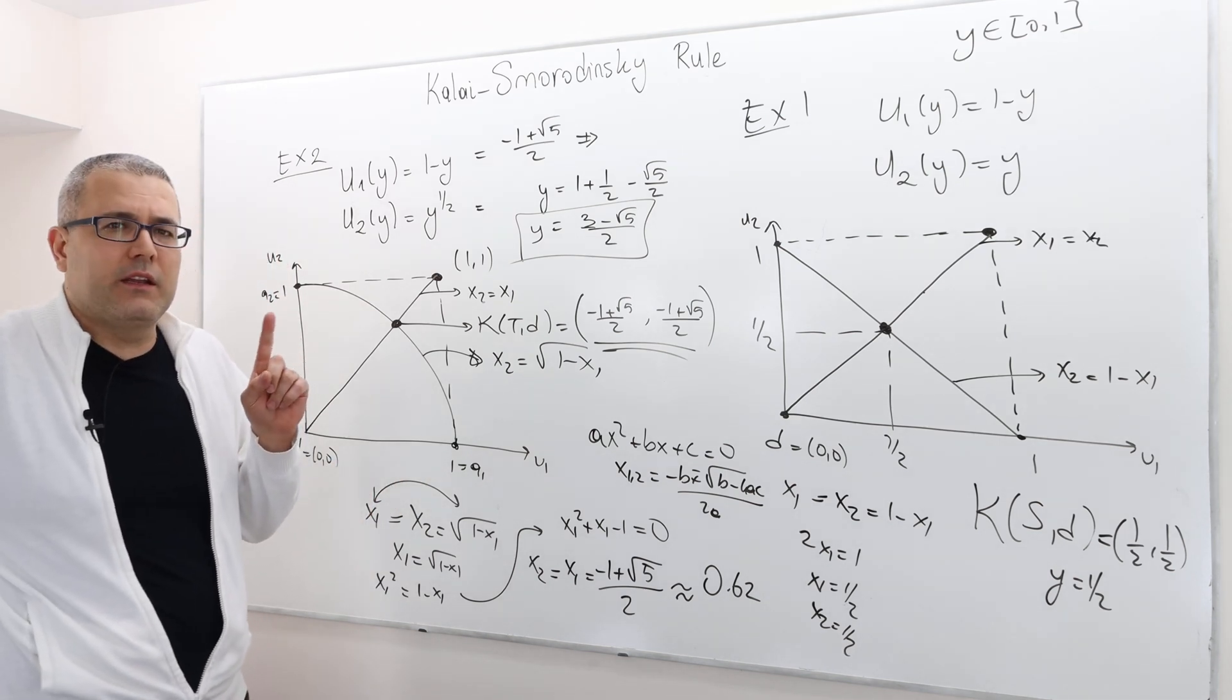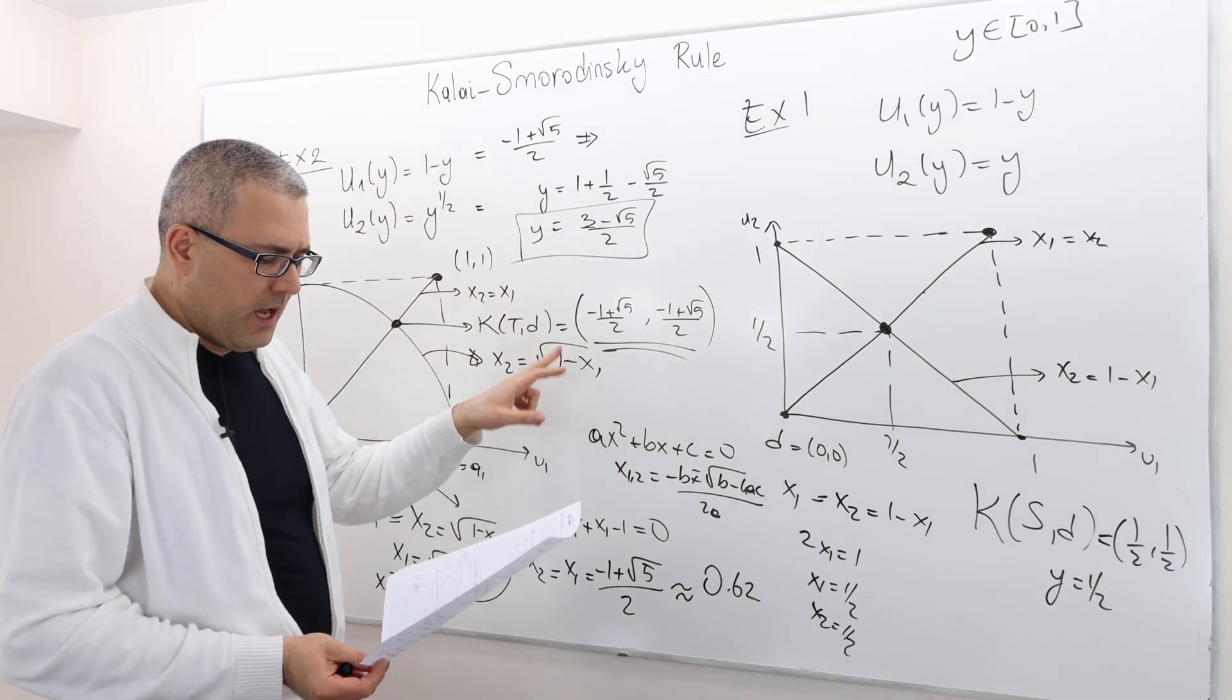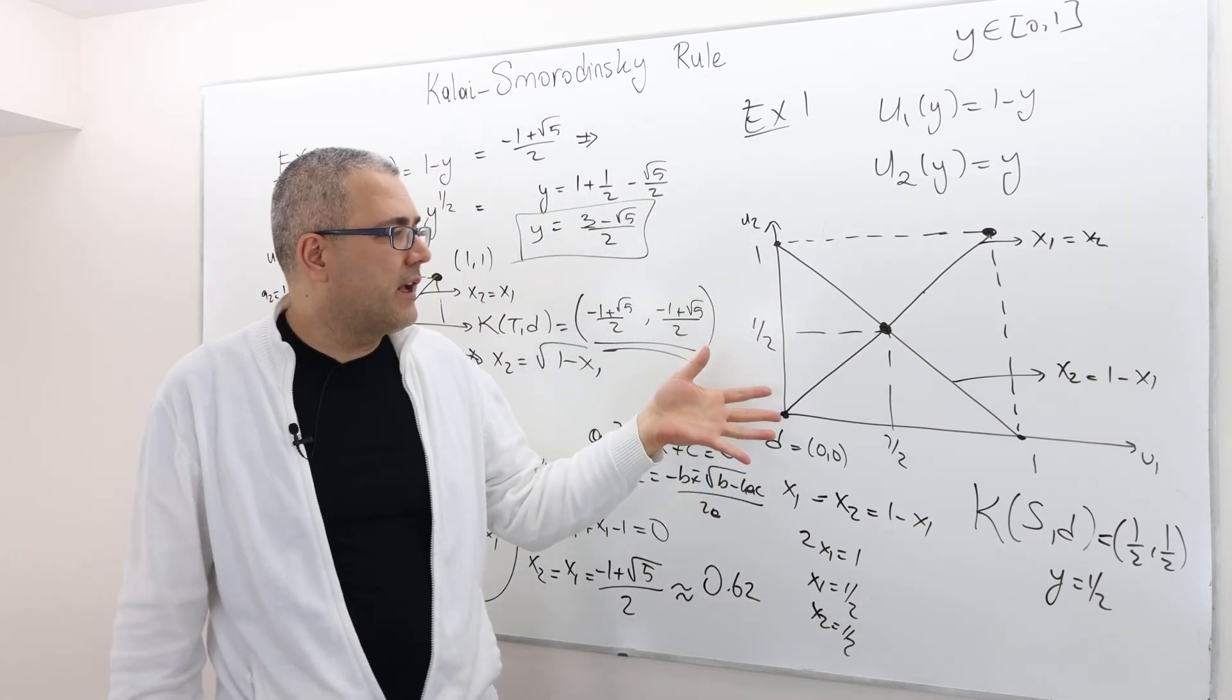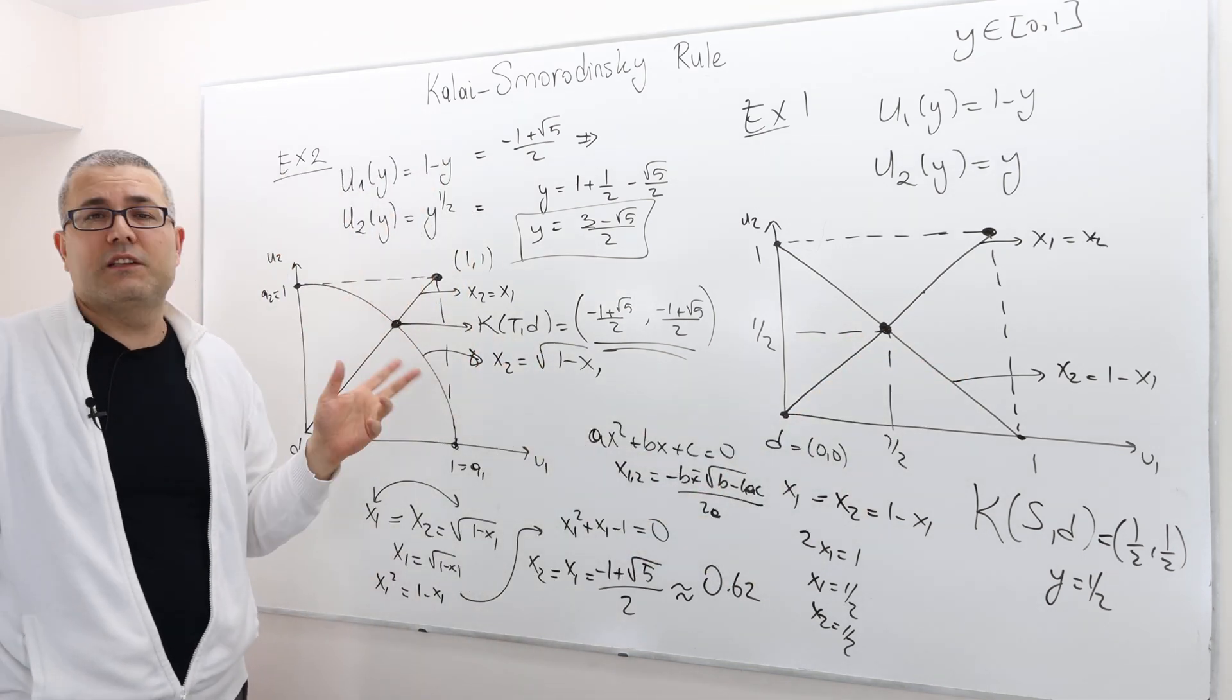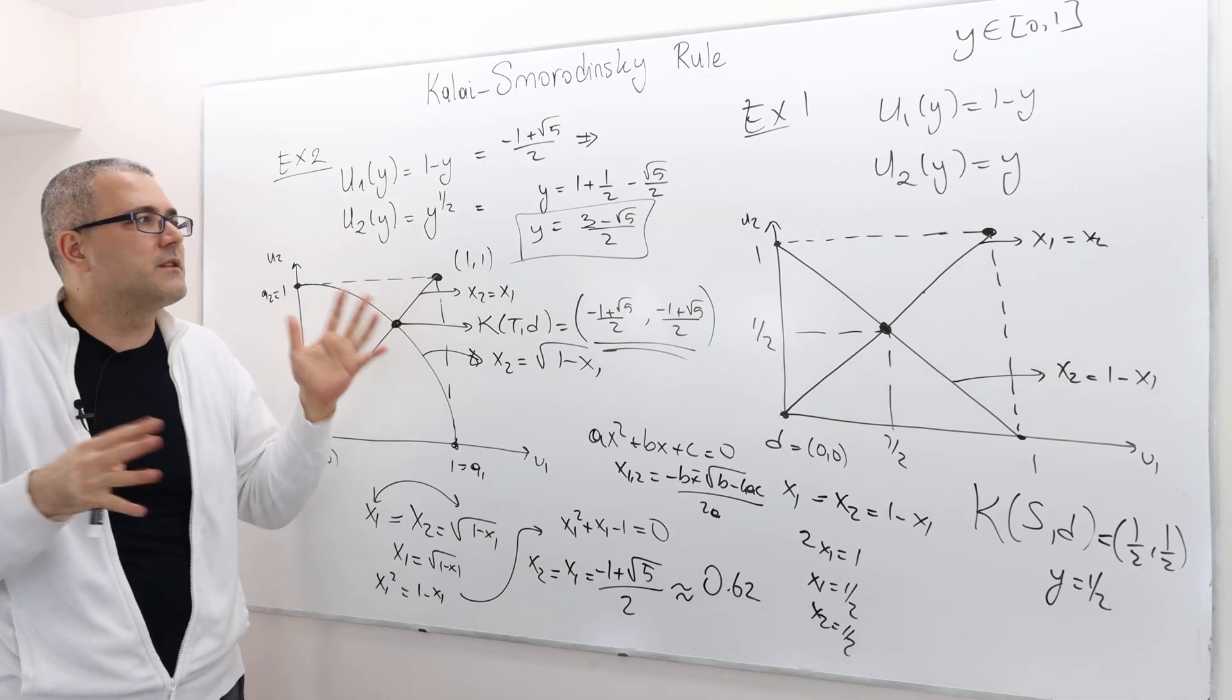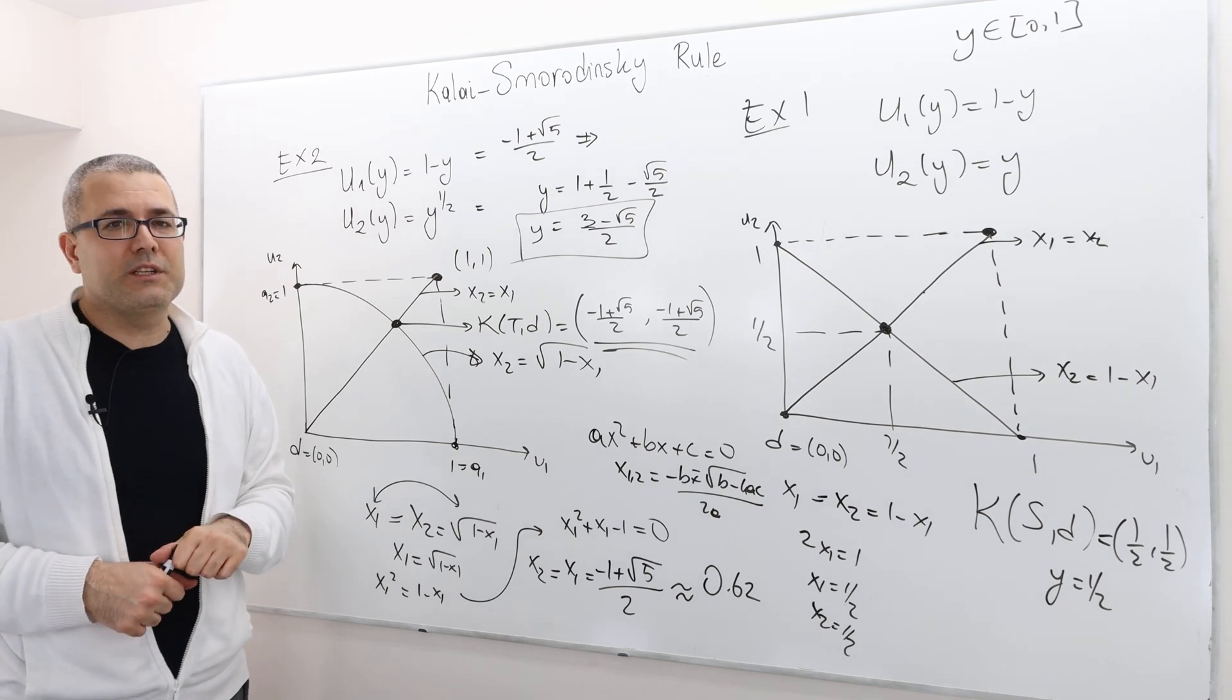This is the Kalai-Smorodinsky rule's outcome. And if you remember, the Nash bargaining rule was providing us something different, like 2 over 3. Player 1 was getting 2 over 3, and player 2 was getting squared of 1 over 3. So Kalai-Smorodinsky and Nash provides exactly the same solution in this problem, but they provide completely different solutions in this problem, which is perfectly fine because there are different rules. Sometimes their solutions may coincide, but obviously in some environments, for some problems, they're going to suggest different solutions. But this is at least how we can solve or find the Kalai-Smorodinsky solution for a bargaining problem.